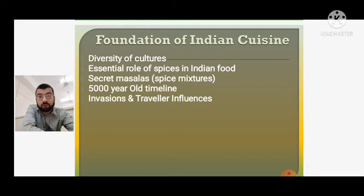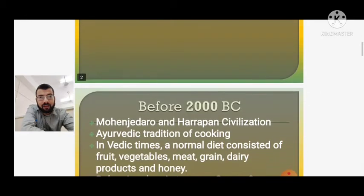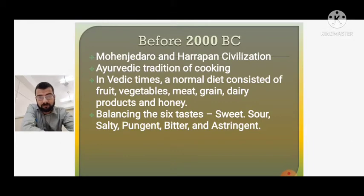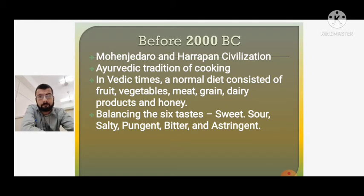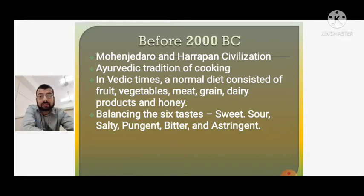Let me take you through the timeline. Before 2000 BC, we are basically talking about the Mohenjo-daro and Harappan civilization. As you all know, it was the first developed civilization. In those times, these people had drainage systems, well systems, houses, cattle farming, and agriculture. They were technologically advanced people. At the same time, the Ayurvedic tradition of cooking grew in India, which defined food as sattvik, tamasik, and rajasik — three categories of food as per Ayurveda.